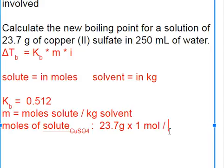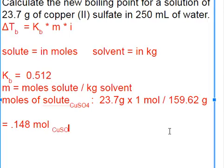So 159.62 grams per mole. 23.7 divided by 159.62. This is 0.148 moles of CuSO4.